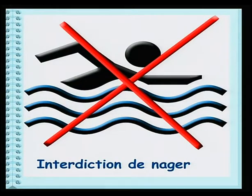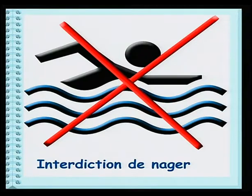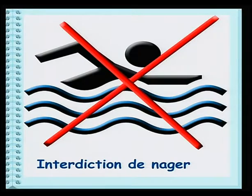Interdiction de nager. Donc, pas le droit de nager. Imagine qu'une personne se retrouve à la mer, mais qu'il ne lit pas bien ce panneau. Donc, il ne comprend pas l'interdiction. Il décide d'aller nager. Que peut-il se passer? Eh bien oui, il risque d'avoir des problèmes ou même de se noyer. Alors, tu vois bien que lire et comprendre une consigne est nécessaire.